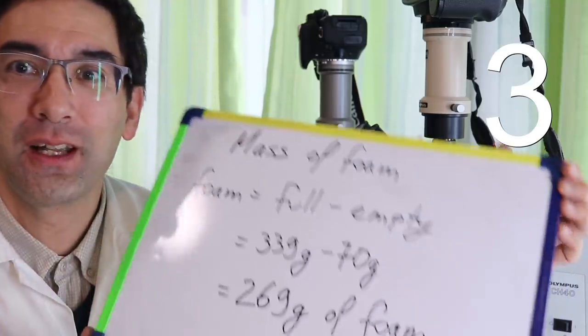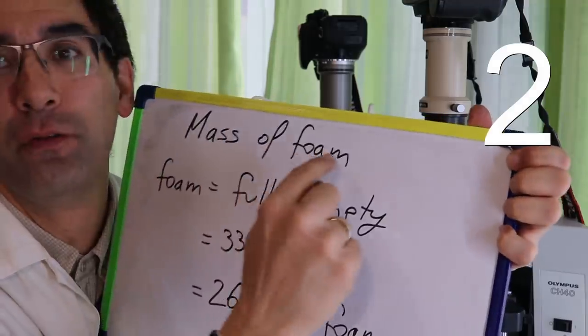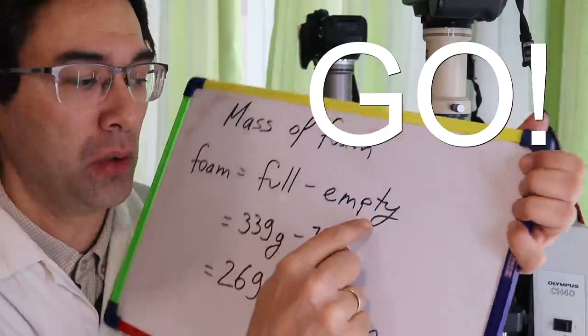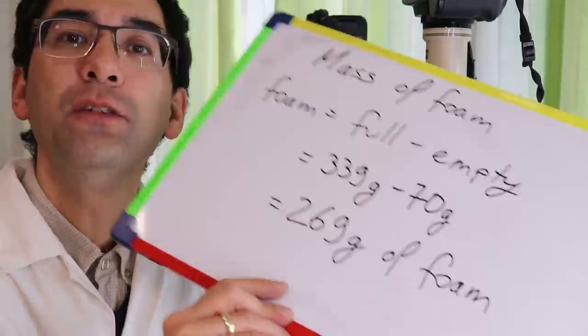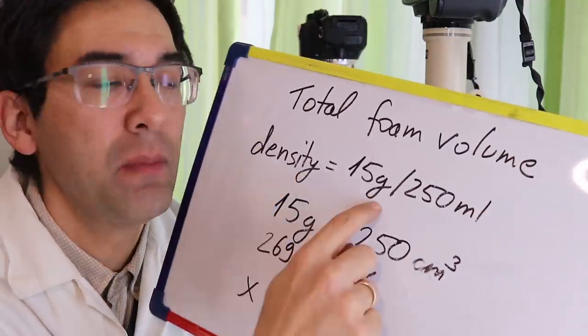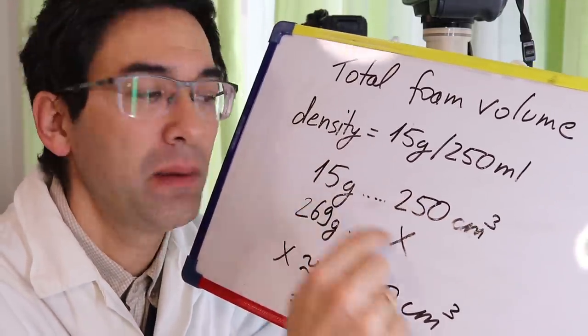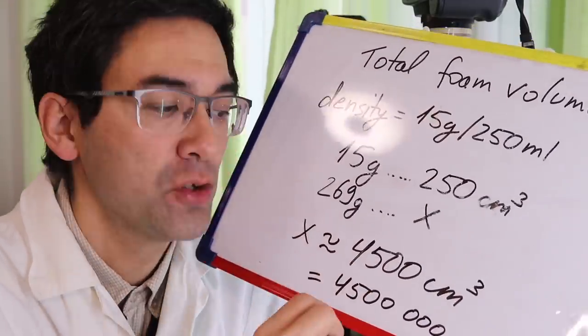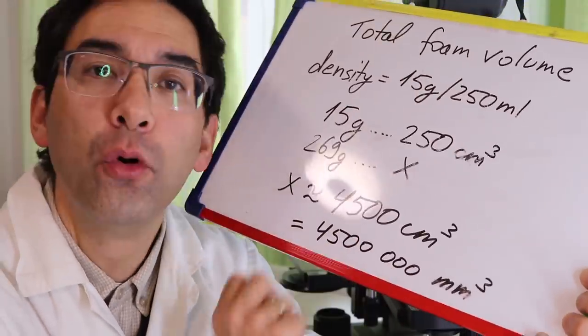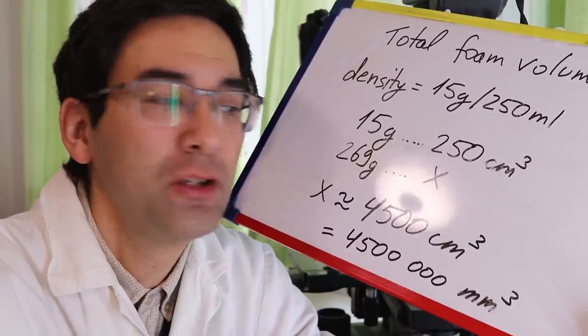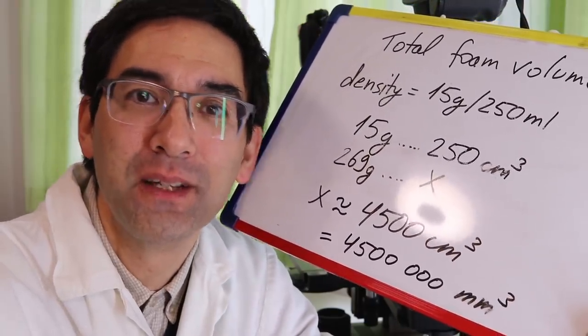Are you ready for the fastest math lesson in your life? Well, watch and see. So let's first calculate the mass of the foam. We have to subtract. Four and a half million cubic millimeters. So that's step one.